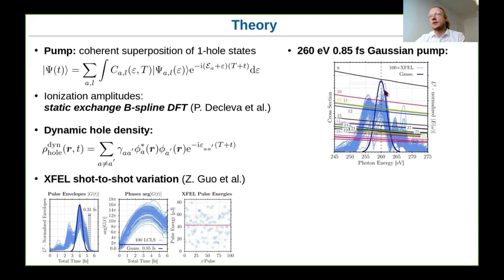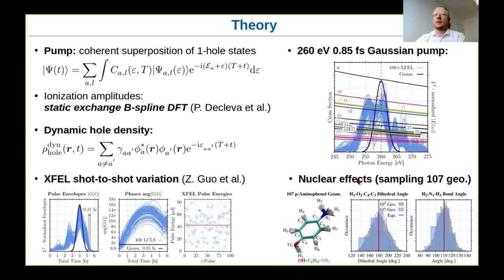More important for the simulation is the spectral domain. In the spectral domain, the spectra of the pulses compared to the cross-sections of the aminophenol molecule show quite some variation. However, the cross-sections are very flat in this region, so the effect might not be as large as it could be. Particularly interesting is the comparison of the shot-to-shot variation effect with respect to the influence of the nuclear wave function, for which we use a sampling approach with around 100 geometries.